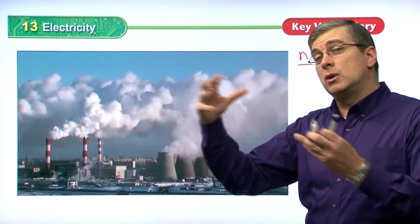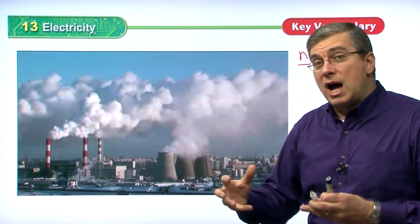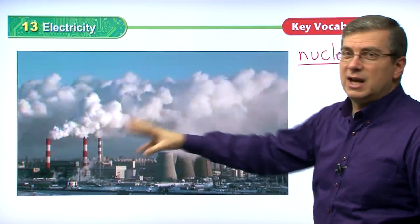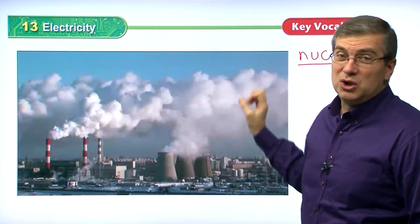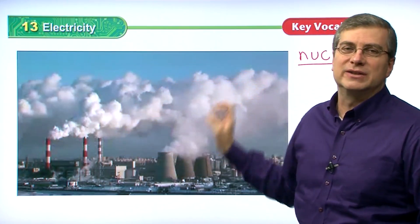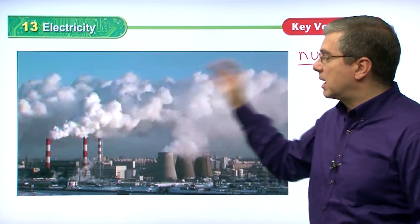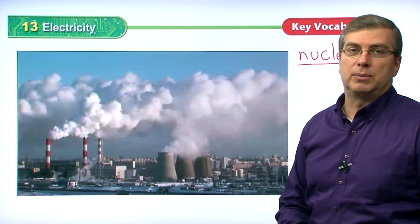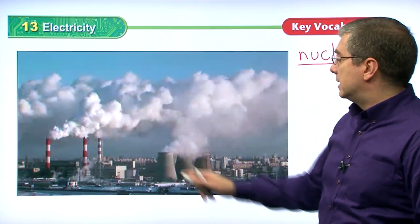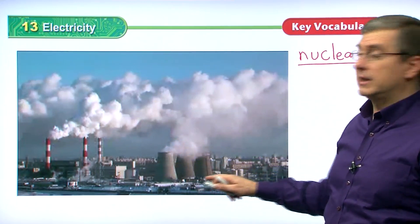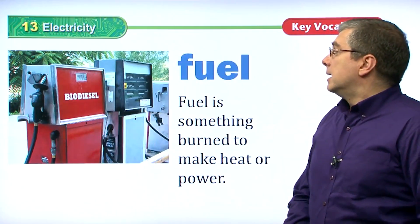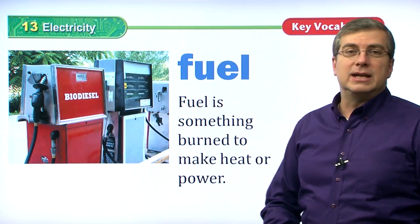Hot water is used to produce electricity. The water is so hot it creates steam, and that steam comes off here. It's not really a lot of pollution — it looks bad but most of this is water vapor coming out of the power plant. This is a typical example of a nuclear power plant.